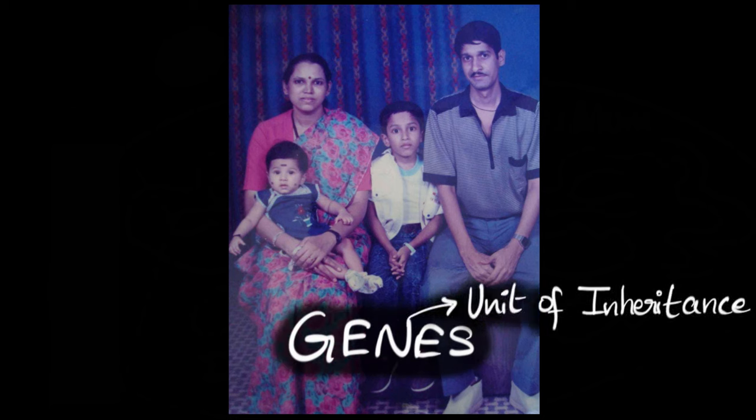Genes are what we call the unit of inheritance. Basically, we say that genes get passed along from parents to their kids, and that's why we look similar to them. But what exactly are these genes? Let's find out.